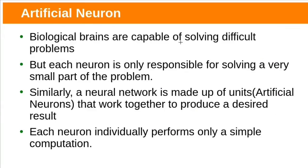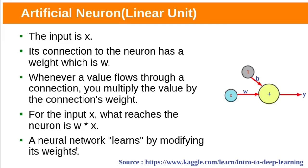Biological brains are capable of solving difficult problems, but each neuron is only responsible for solving a very small portion of the problem. Similarly, a neural network is made up of artificial neurons, we usually call them units, that work together to solve the problem. Each neuron individually performs only simple computation.